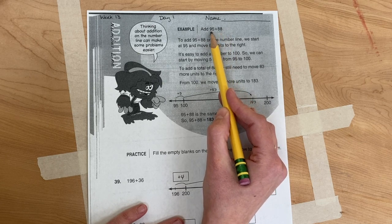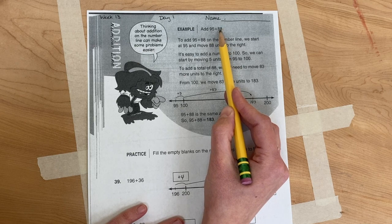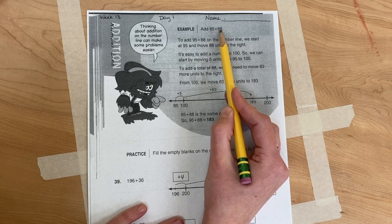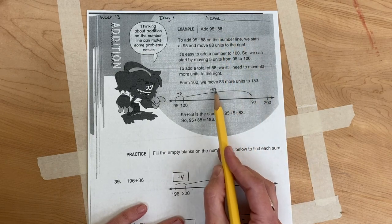Because in total, we're going to add 88. But if we first are going to add 5 to get to 100, we're taking 5 away from this 88 that we're going to add. So if we take 5 away from 88, we get 83. So that's where that number came from.